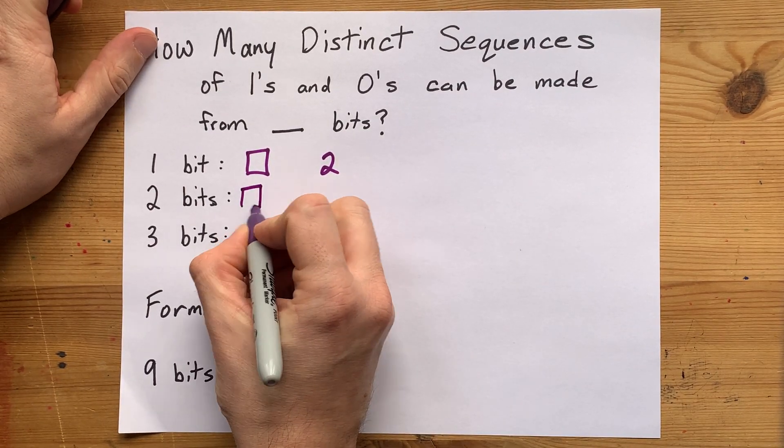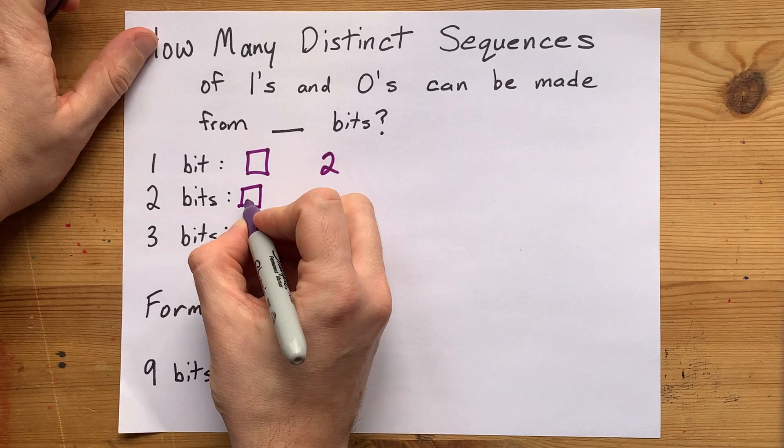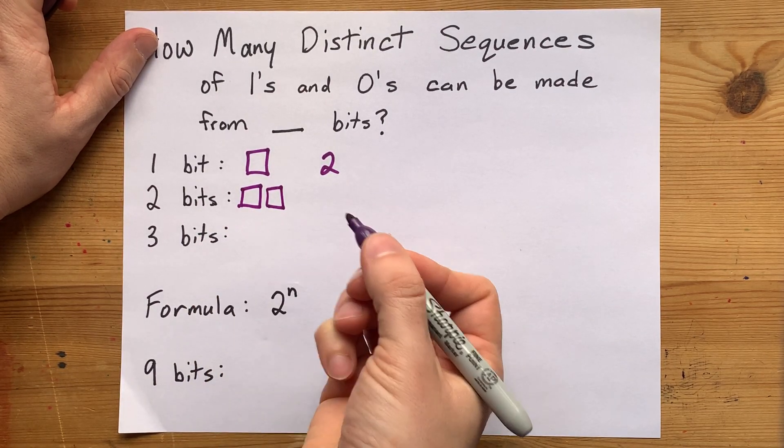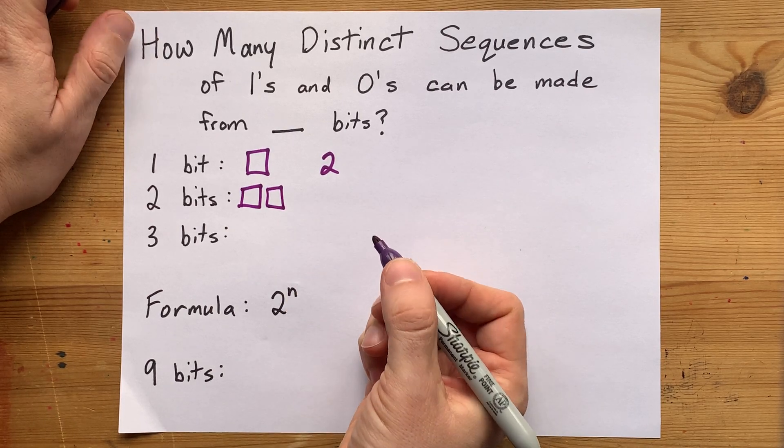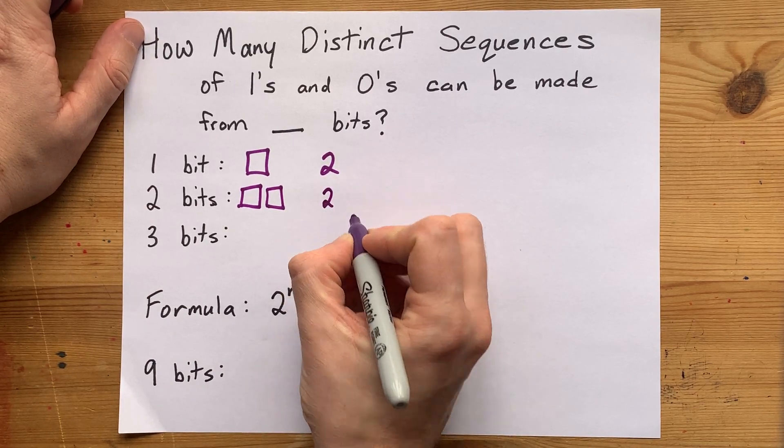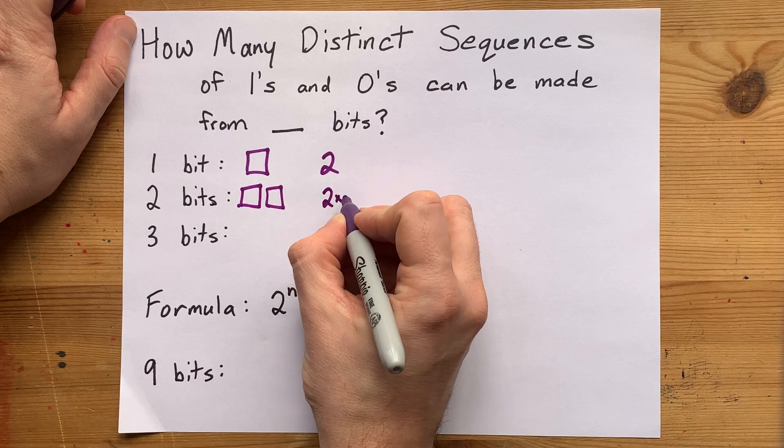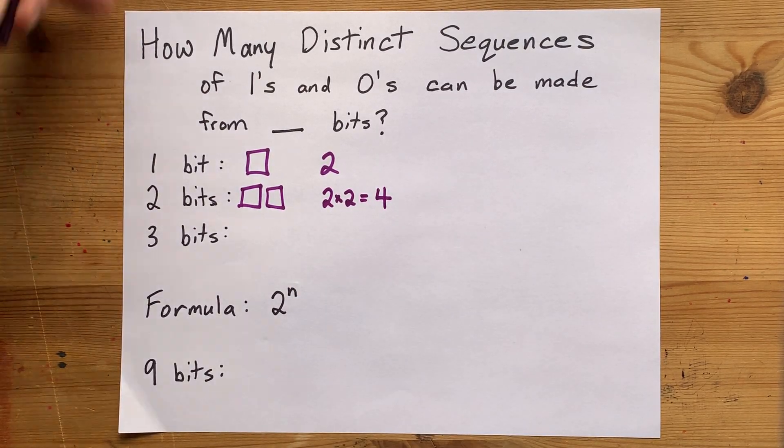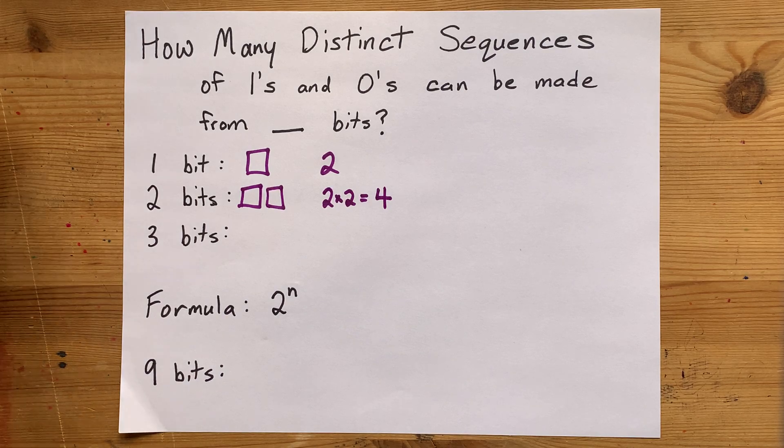If you have two bits, then this first bit could be 1 or 0, and this next bit could also independently be 1 or 0, which means you have two options for the first bit and two options for the second bit. That makes four distinct sequences of 1s and 0s for two bits.